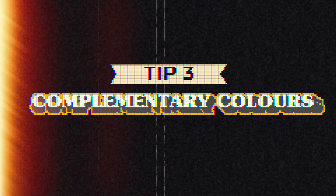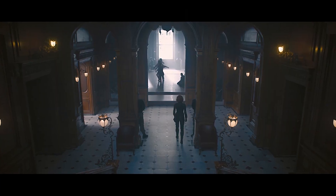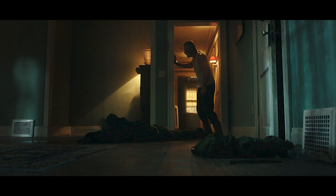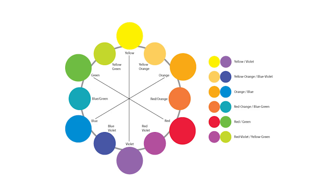The third tip is to learn and incorporate complementary colors. In the film industry, a super popular combination I love to use is teal and orange. To easily understand how complementary colors work, just screenshot this color wheel — you simply pair a color from the wheel to the opposite side.